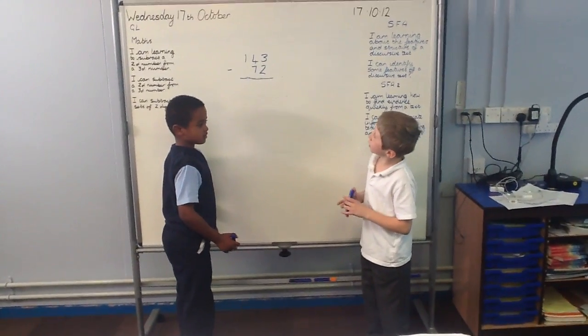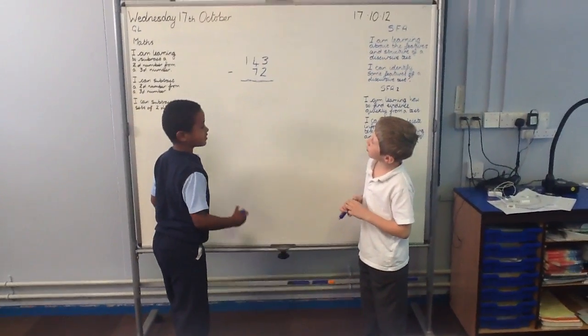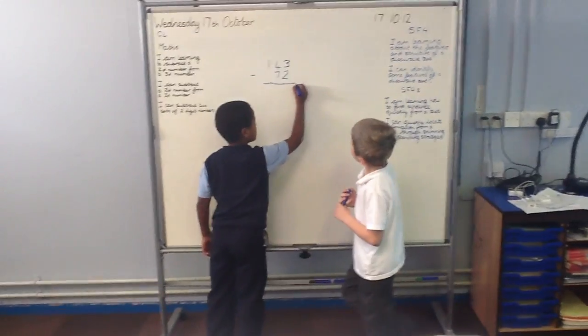We are taking away a two-digit number from a three-digit number. This is how you set it out.